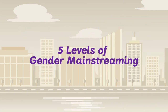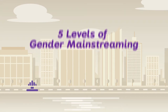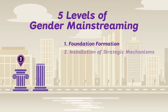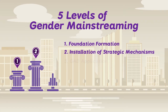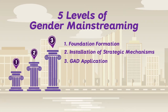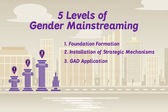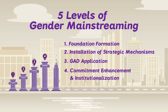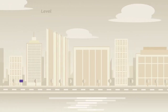The Enhanced GMEF identified five levels of gender mainstreaming: Foundation Formation, Installation of Strategic Mechanisms, GAD Application, Commitment Enhancement and Institutionalization, and Replication and Innovation.